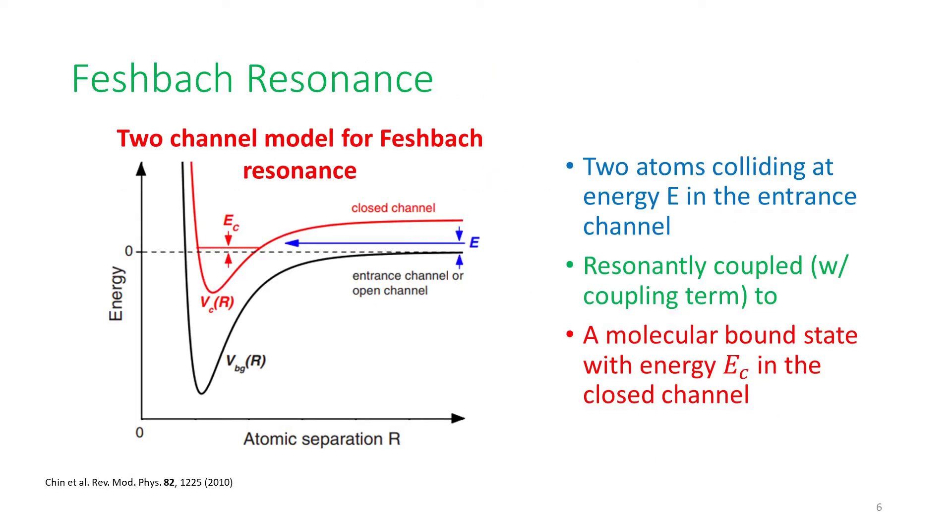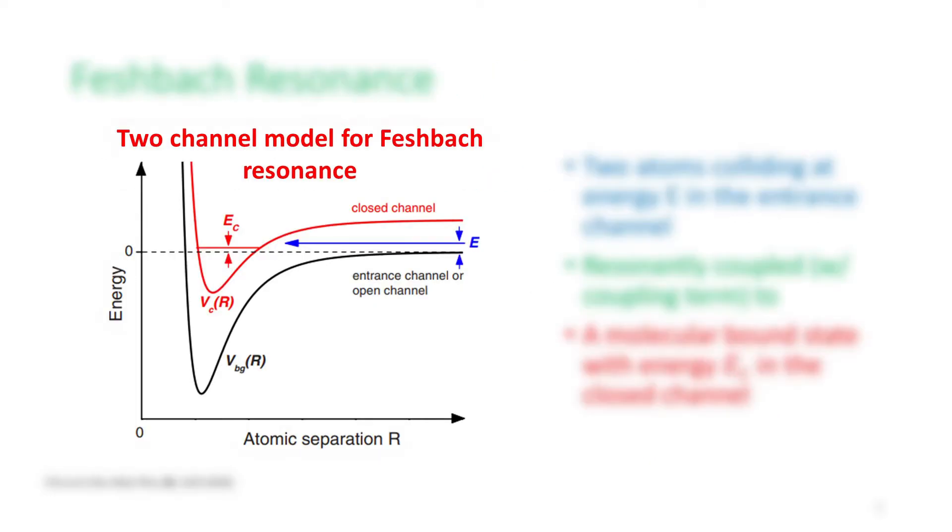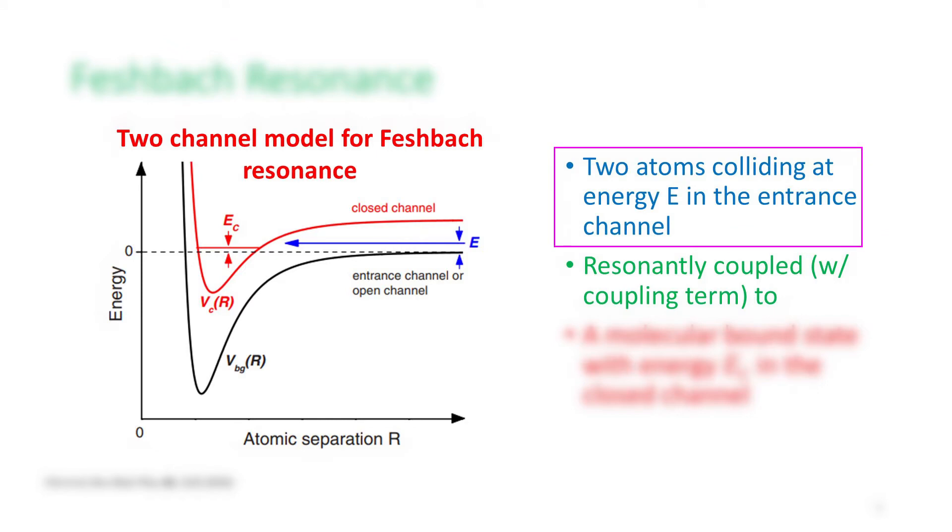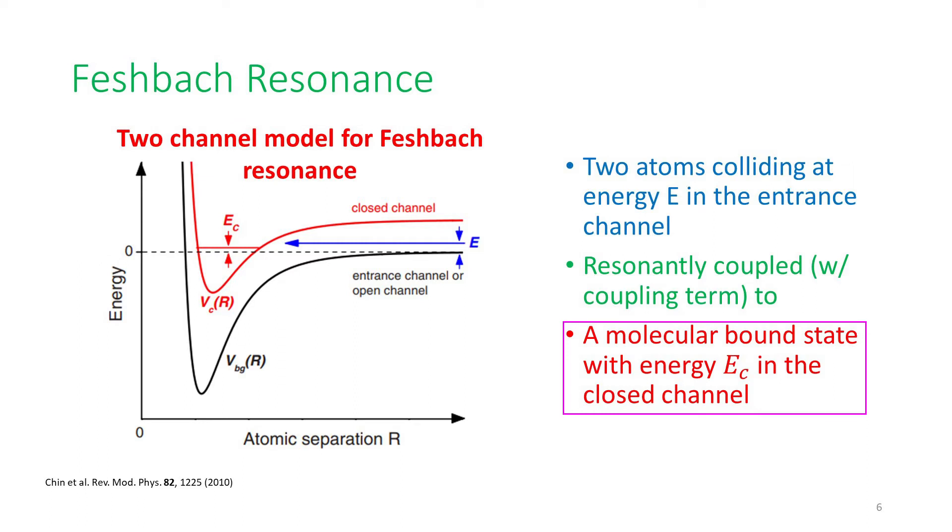Now let's move on to the basics of Feshbach resonance. On the left is a sketch of the two-channel model for Feshbach resonance. The vertical axis is the potential energy for each channel in the shape of Lennard-Jones potential, and the horizontal axis is the separation between the two atoms in question. When these two channels correspond to atoms in two different states, they will have different potential energies. If there is a coupling term in the Hamiltonian, and when the two atoms colliding at energy E in the entrance channel have the same energy as a molecular bound state with energy Ec in the closed channel, the Feshbach resonance will happen and the two free atoms will bind to form a Feshbach molecule.